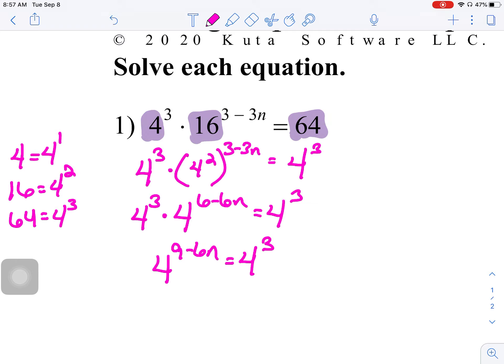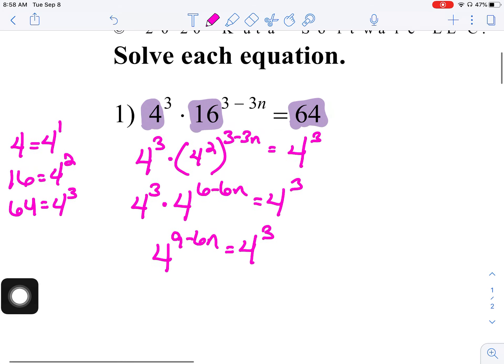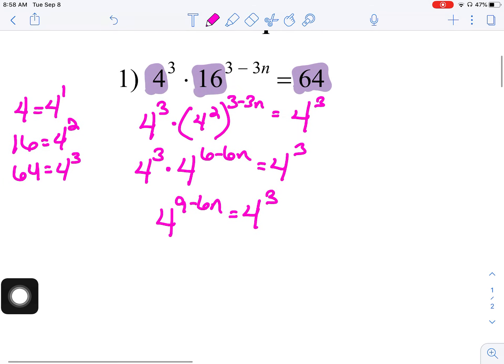All right, once you have your equation down to a single base on the left side and a single base on the right side, because these two bases are equal, the only way for this equation to be equal is for us to say that the exponents are equal to each other. That's it. That's the only way it's going to happen. So, at this point, I'm going to solve this equation.